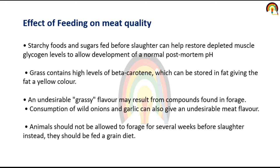Effect of feeding on meat quality: starchy food and sugar fed before slaughter can help restore depleted muscle glycogen levels to allow development of a normal post-mortem pH. Grass contains high levels of beta-carotene which can be stored in fat, giving fat a yellow color. An undesirable greasy flavor may result from compounds found in forage. Consumption of wild onion and garlic also gives an undesirable meat flavor. Animals should not be allowed to forage for several weeks before slaughtering; instead they should be fed a grain diet.